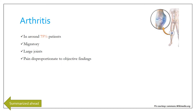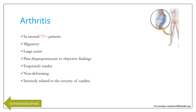The pain is disproportionate to the objective findings and is exquisitely tender. It is non-deforming, compared to juvenile idiopathic arthritis, previously referred to as juvenile rheumatoid arthritis. It is inversely related to the severity of carditis — if arthritis is very severe, carditis is likely to be mild, and vice versa.